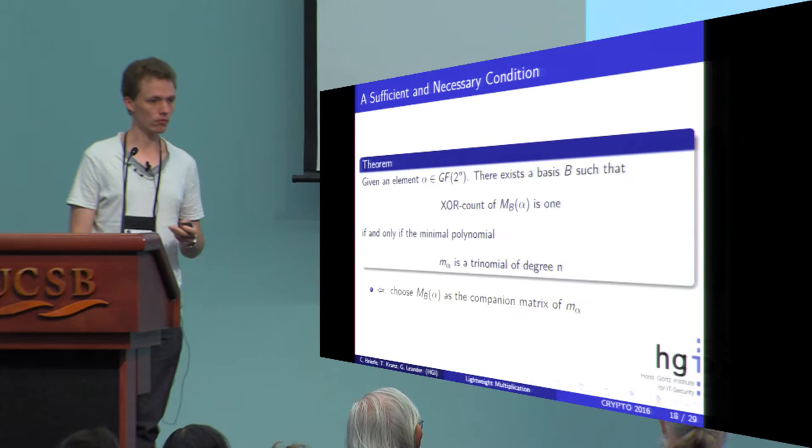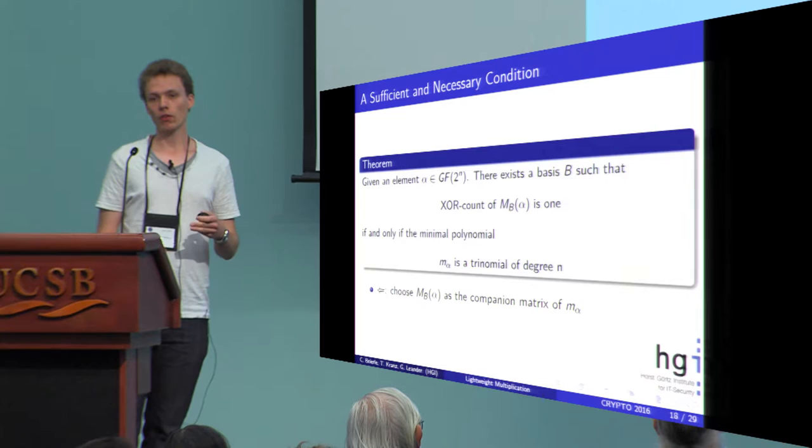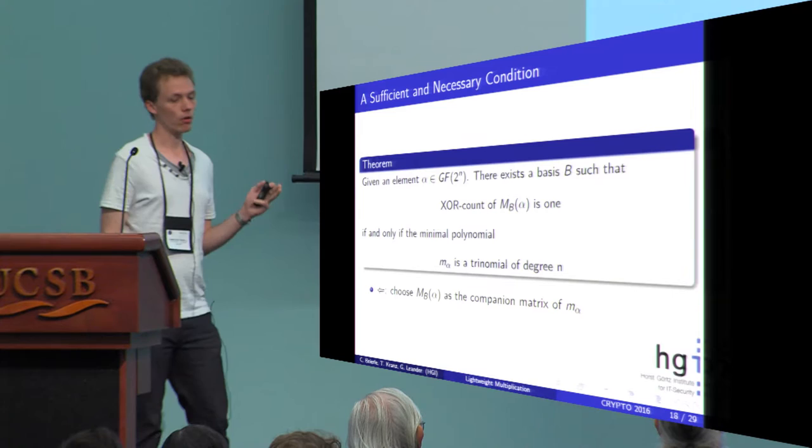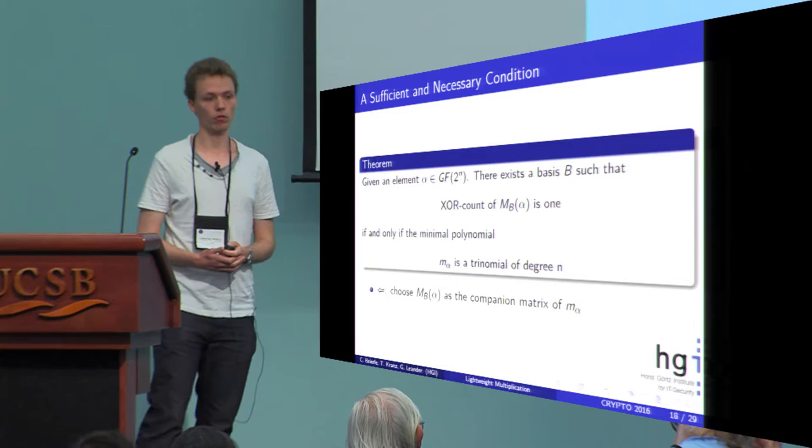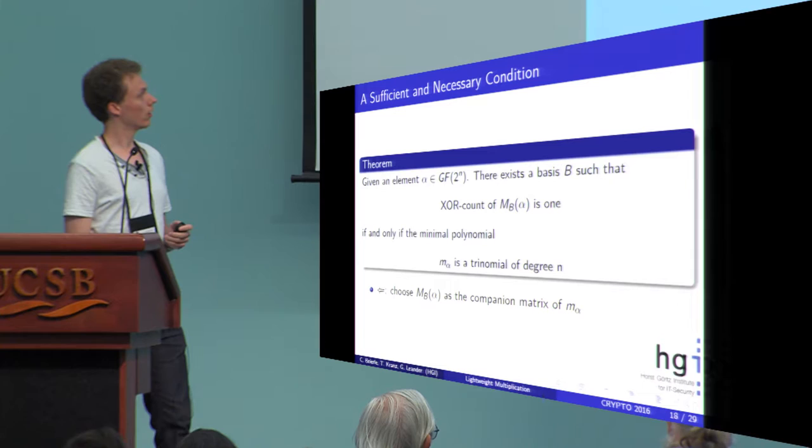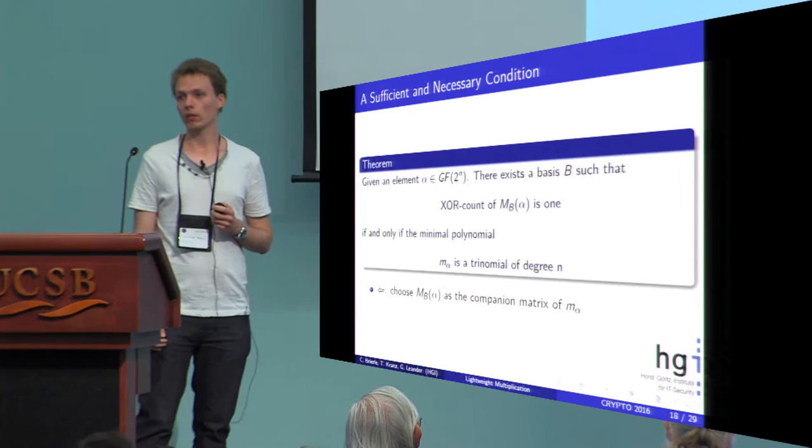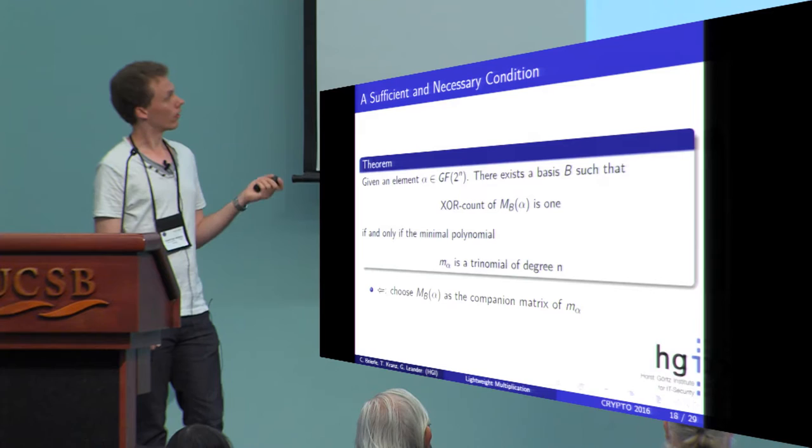Why is it the case? We can derive the following sufficient and necessary condition. Given an element alpha, for this element there exists a basis such that we have this matrix representing multiplication with alpha with an XOR count of one if and only if the minimal polynomial of the field element is a trinomial of degree n. By trinomial I mean a polynomial with weight three—it has three non-zero coefficients. The first direction is very easy to see. We just choose this matrix as a companion matrix of the minimal polynomial of the field element. Then by the construction of the companion matrix it will only consist of a permutation matrix plus another non-zero entry.